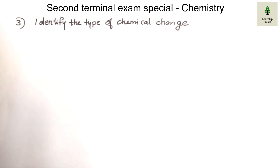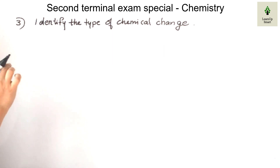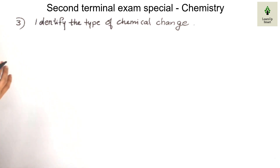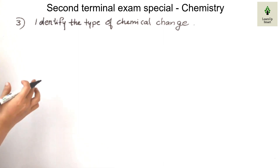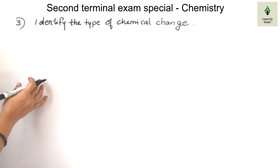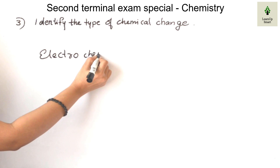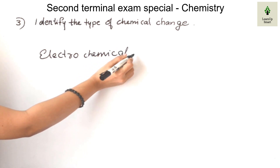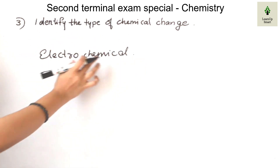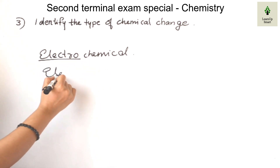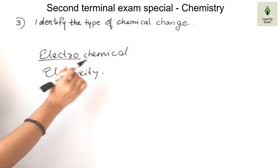Number 2: Gold plating of an iron ring. The form of energy mainly exchanged is electrons — that is electricity. Electricity is the energy exchanged. Number 3: Glowing of a firefly.